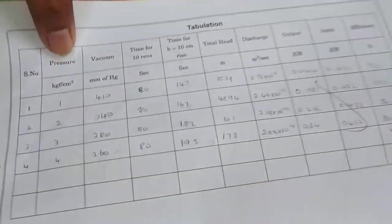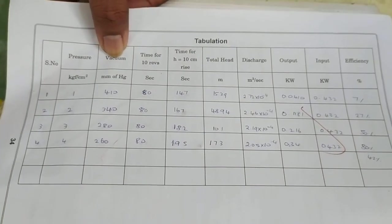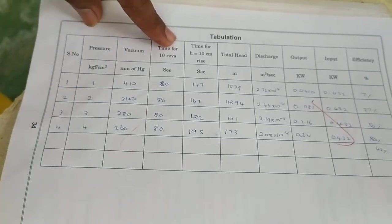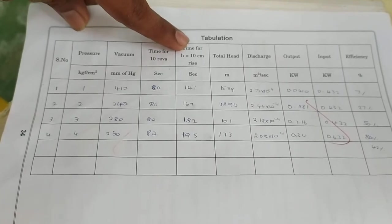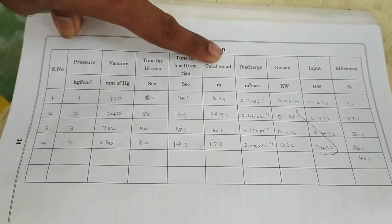Noting down the pressure and vacuum pressure in the meters provided, and time taken for 10 revolutions will be calculated here. Time taken for 10 centimeter rise and that will convert it in terms of total head in meters.